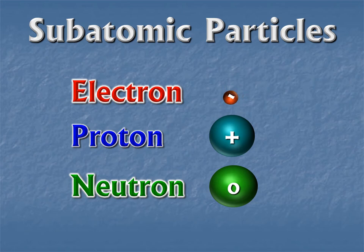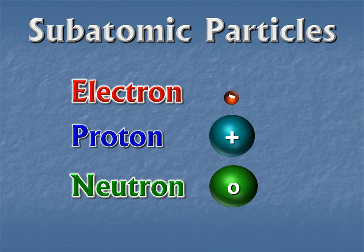Quick review of subatomic particles. Honestly, if you go into quantum physics and study all the different particles now known to exist, it gets complicated. But for the most part, we can still understand most chemical processes by sticking with the fundamental three subatomic particles. It turns out that protons and neutrons are made of even smaller particles called quarks — a proton is two up quarks and a down quark, and a neutron is two downs and an up quark most of the time. But that's not necessary for understanding things at a high school level. So we'll stick with the traditional three: the electron, the proton, and the neutron.